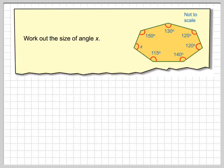Work out the size of angle x. So what we've got here is a heptagon, i.e. a seven-sided shape.